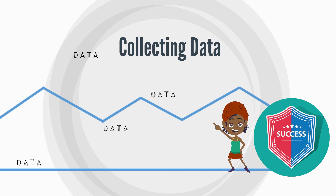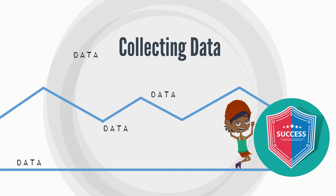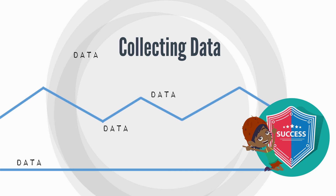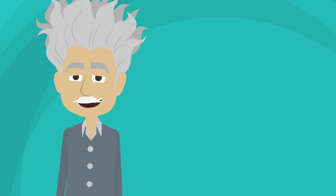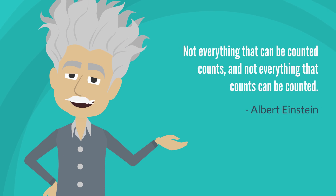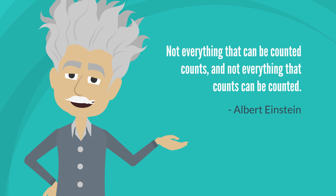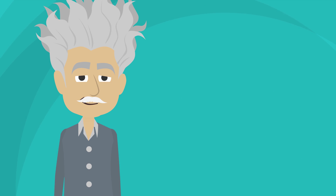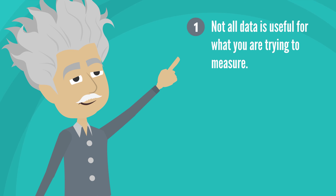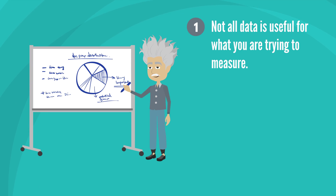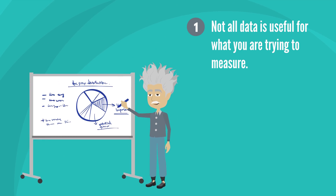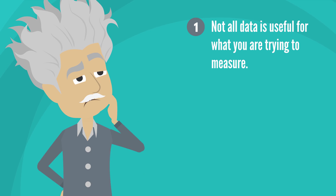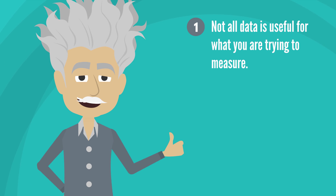Just because you measure something doesn't ensure that you'll optimize it, but measurement is the first step. According to Albert Einstein, 'Not everything that can be counted counts, and not everything that counts can be counted.' There are two things to take away from this quote. First, not all data is useful for what you're trying to measure. While data is important, the right data is essential. Understanding the goal for which you are determining progress will help you select the correct data.